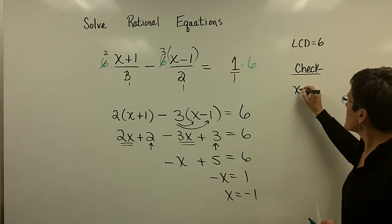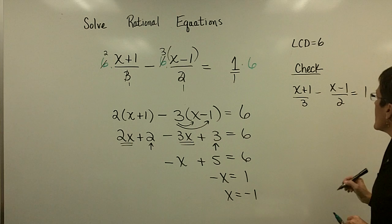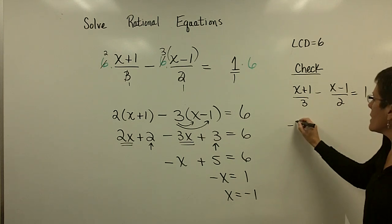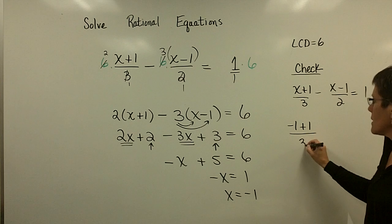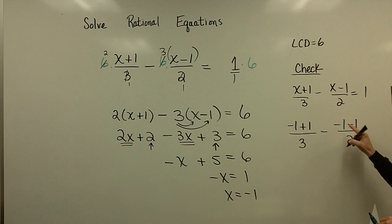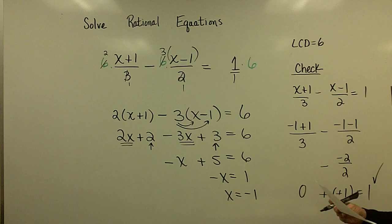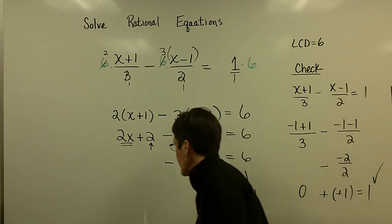The original problem was (x+1)/3 minus (x-1)/2 equals 1. And I got a solution of negative 1. So, negative 1 plus 1 is nothing. So, that's 0. And then here, negative 1 minus 1 is negative 2. So, negative 2 divided by 2 is negative 1. And here, I want to subtract a negative 1. I want to take 0 and subtract a negative 1, or add the opposite. And I want to know if that equals 1 on the right-hand side. And sure enough, it does.